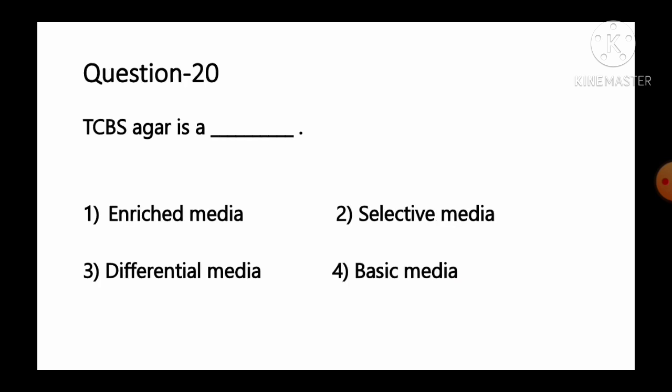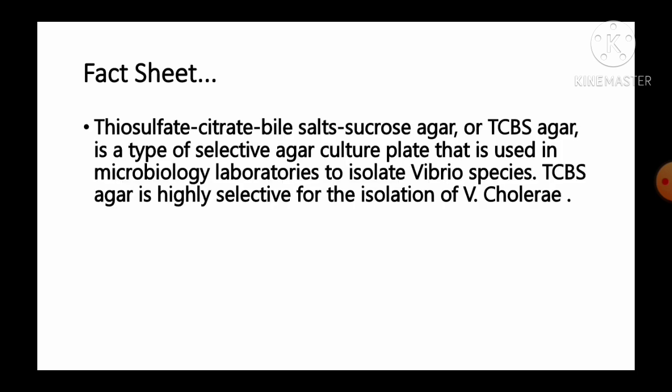Question number 20: TCBS agar is a — option 1 enriched media, option 2 selective media, option 3 differential media, option 4 basic media. Thiosulfate citrate bile salt sucrose (TCBS) agar is a type of selective culture plate used in microbiology laboratories to isolate Vibrio species, especially Vibrio cholerae. So option number 2, selective media, is the correct answer.